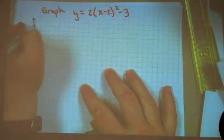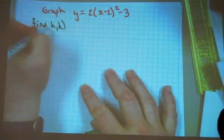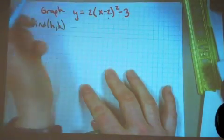Let's graph a parabola that's been given in vertex form. In order to do this, the first thing we have to do is find the vertex, h and k.